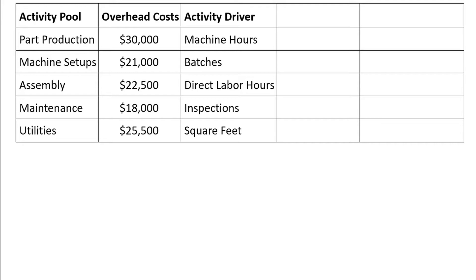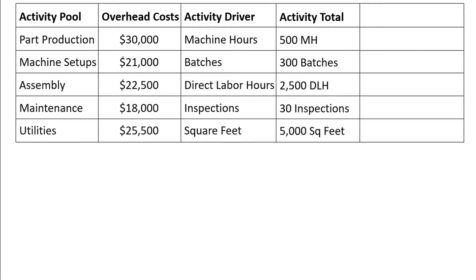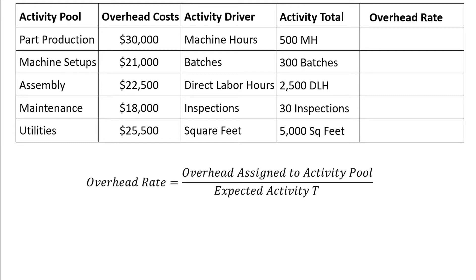The allocation base, or activity driver, is shown for the five activities. The company thinks that machine hours are related to overhead costs in part production, batches are related to the overhead costs for machine setups, direct labor hours are related to overhead costs in assembly, inspections are related to overhead costs in maintenance, and square feet occupied is related to overhead costs in utilities. We have the expected activity levels for the five activities — the total number of machine hours, batches, etc. expected to be used in this period. The next step is to calculate the five overhead rates, one per activity, by taking the overhead assigned to each activity pool and dividing by the expected activity total.